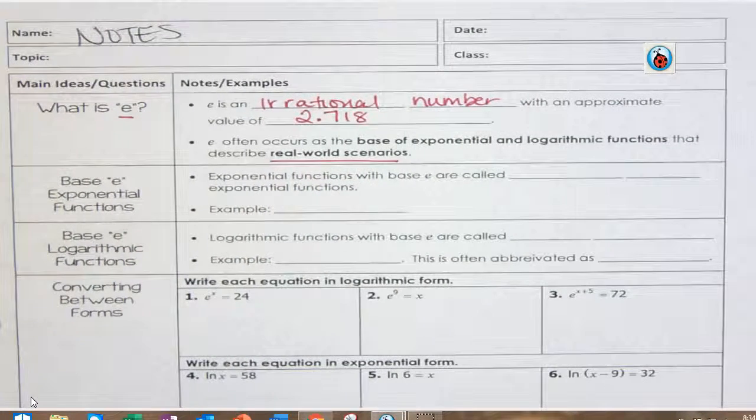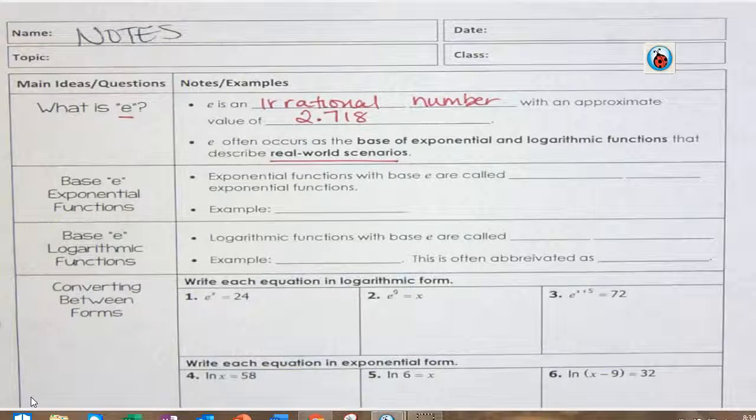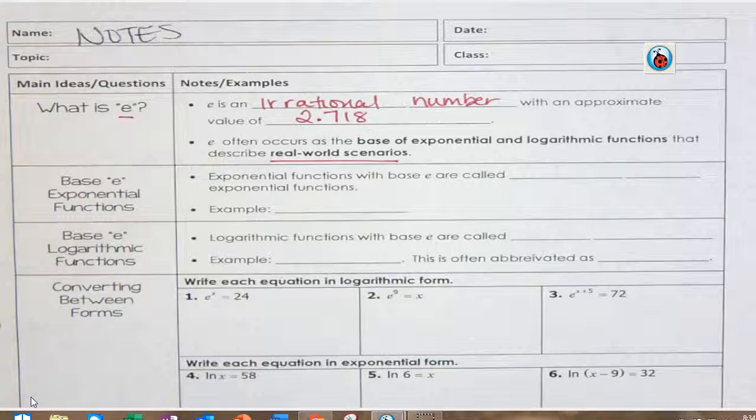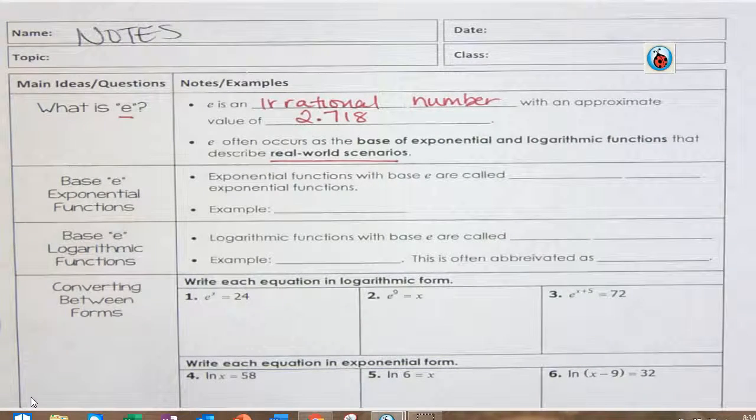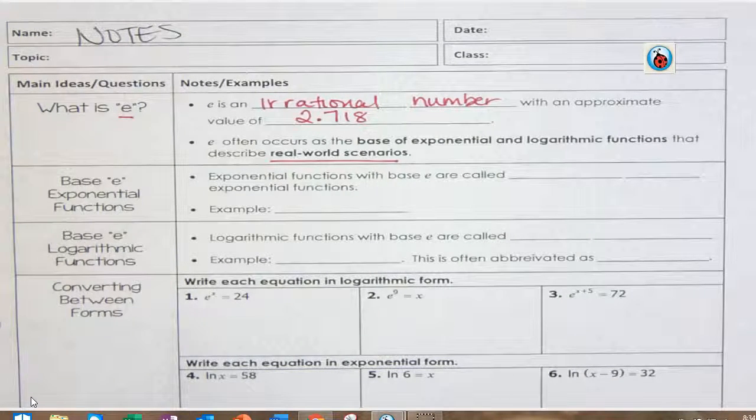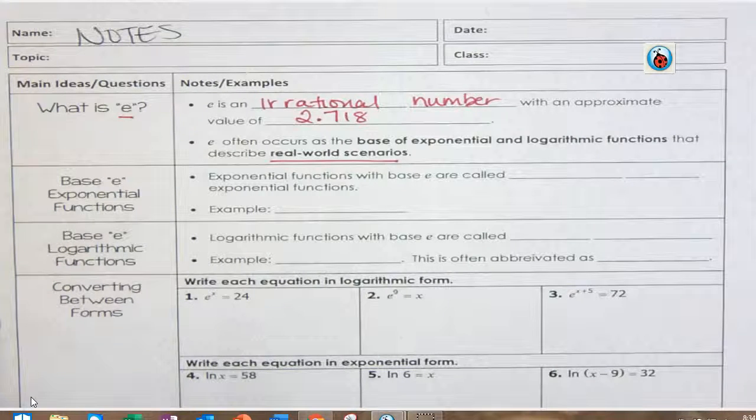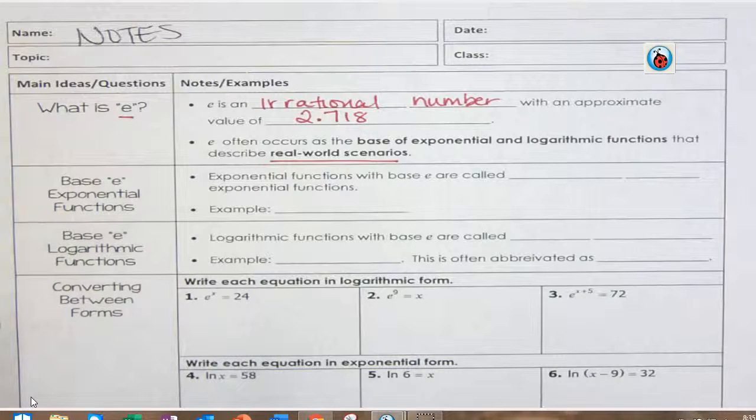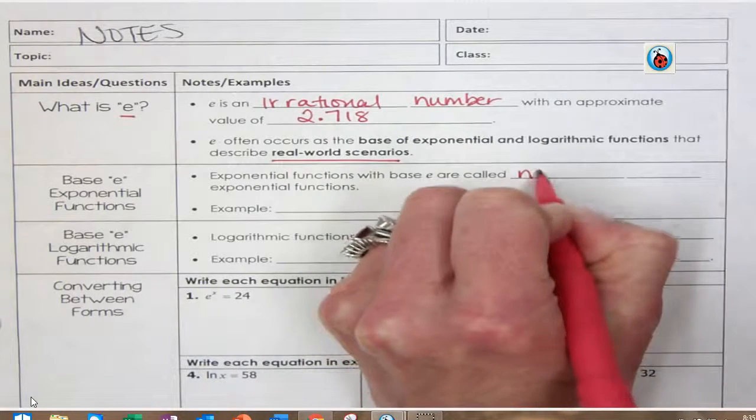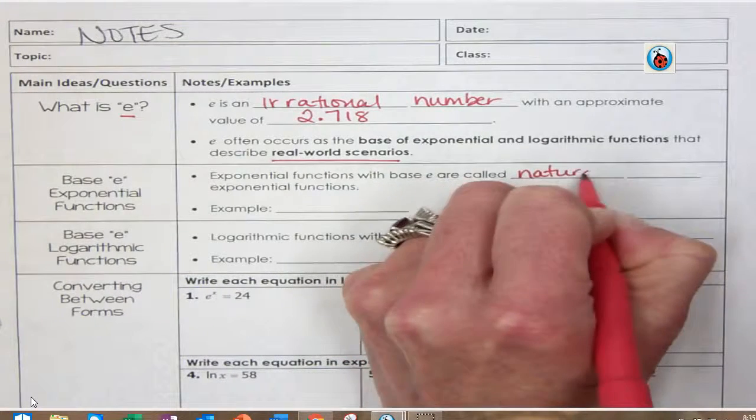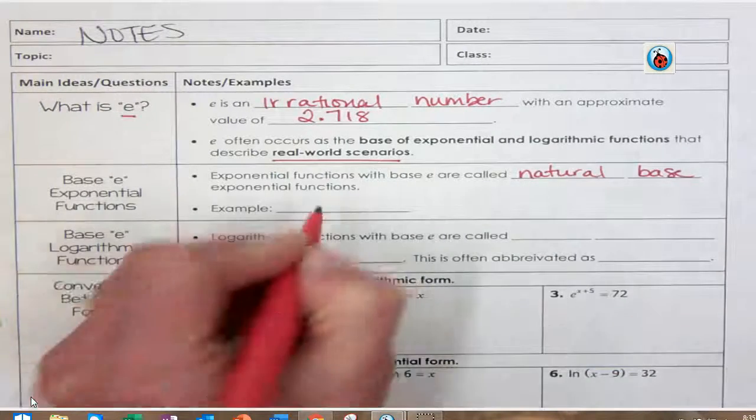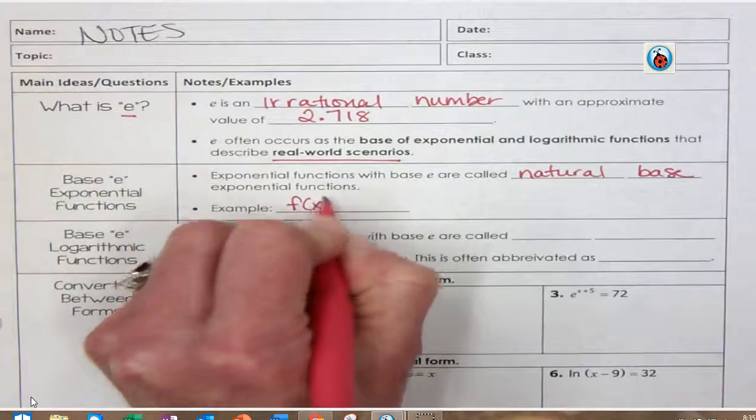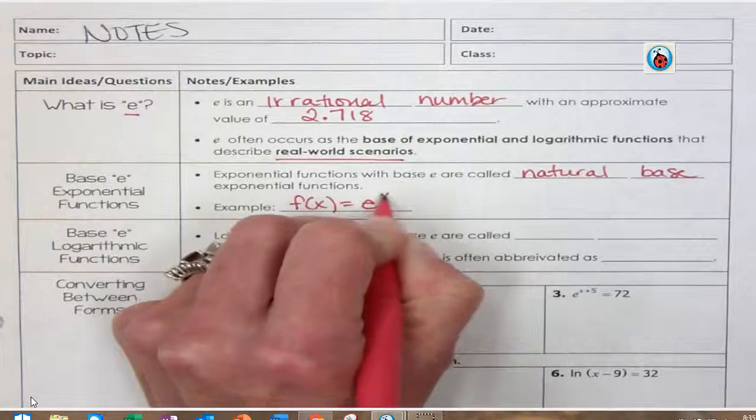What they're saying is things grow at an exponential rate of E in nature and in science. So the exponential function with a base of E is called a natural base, and basically that's f(x) = E^x.